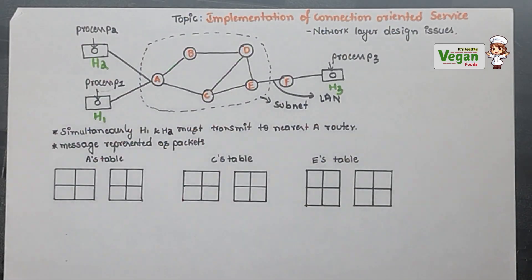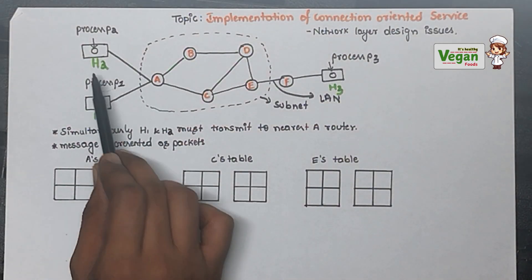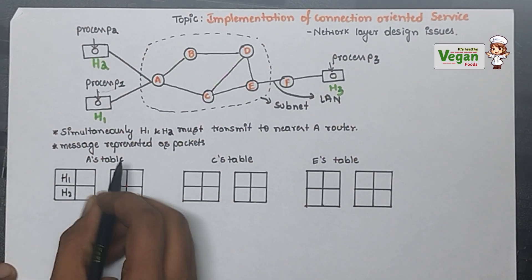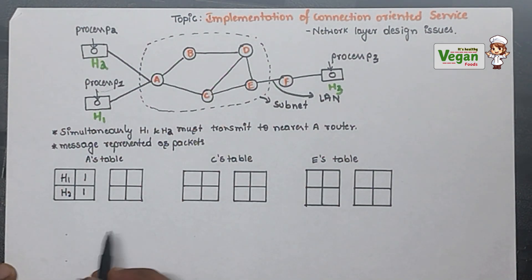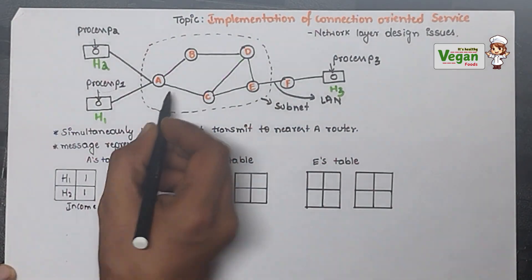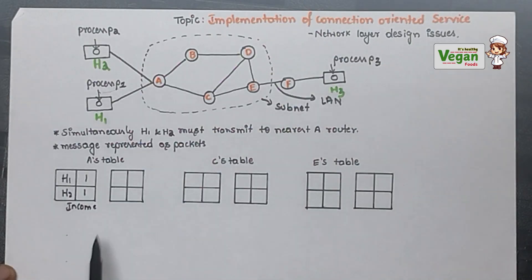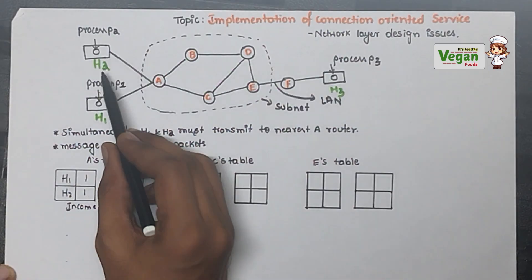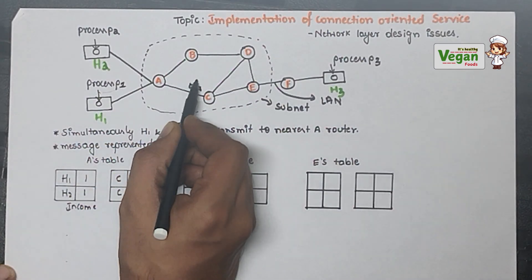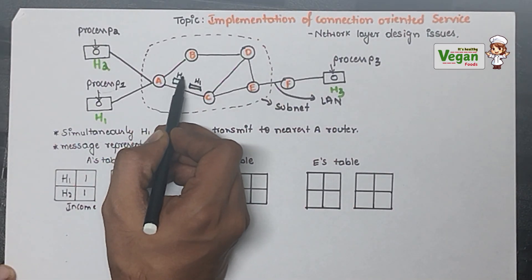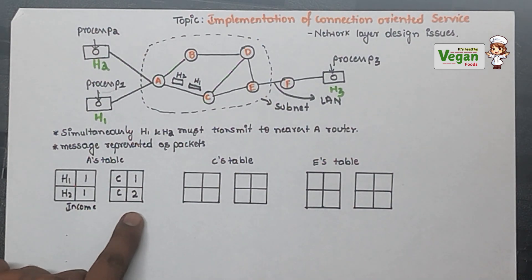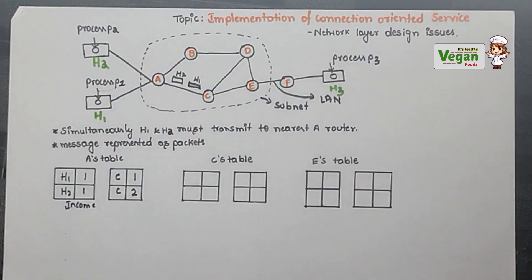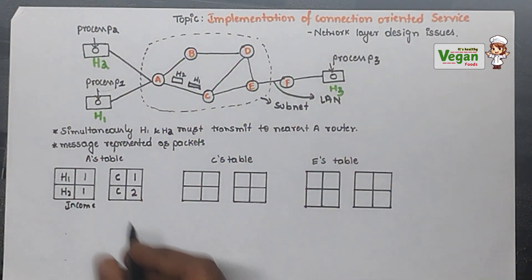Router A is receiving information from H1 and H2. H1 is giving input so I will write 1, and H2 is giving input so I will write 1 for incoming. For outgoing it will go to C. H1 will go first, encoded as 1. H2 comes next and is encoded as 2, because if H2 were also encoded as 1 there would be confusion between the H1 message and the H2 message. So H2 is represented as 2 in the outgoing table.